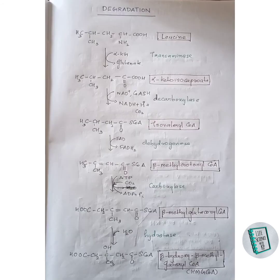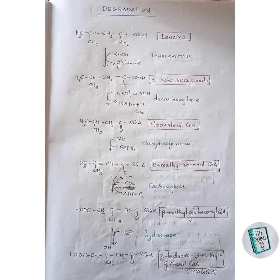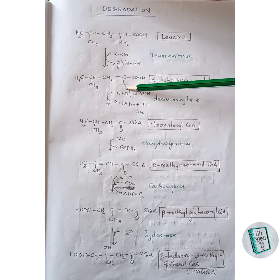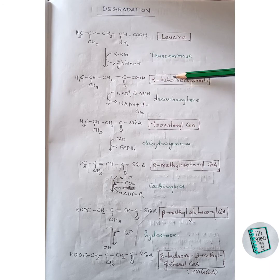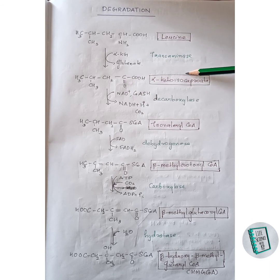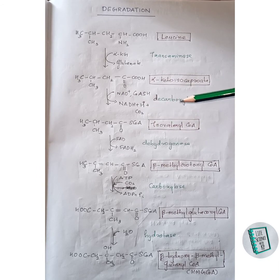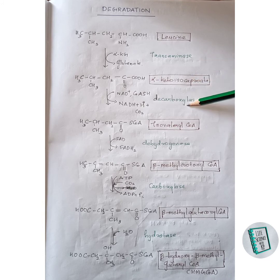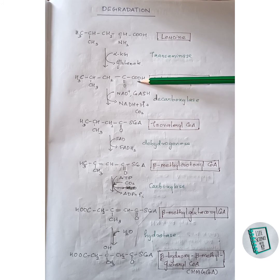Leucine degradation begins with a transamination reaction in which the NH2 group of leucine is replaced with a keto group, forming alpha-ketoisocaproate. This alpha-ketoisocaproate then undergoes decarboxylation and dehydrogenation in the presence of decarboxylase enzyme to form isovaleryl-CoA: the COO group is removed as CO2.